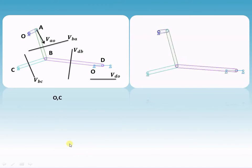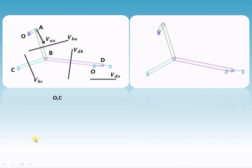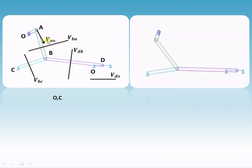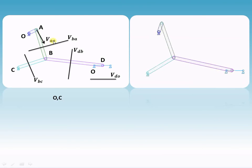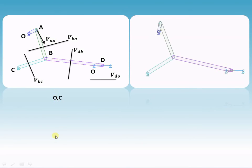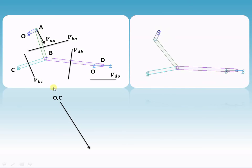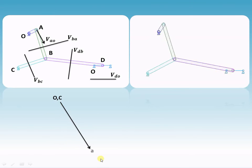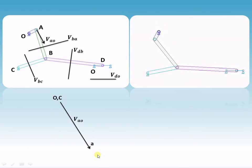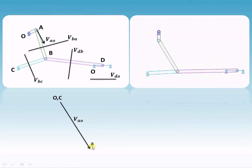First, in the space diagram, take all fixed points — O and C. Now draw to scale the vector V_AO. Out of A and O, point O is known, so from O draw a line parallel to this vector representing velocity of A with respect to O. Since we are finding velocity of A with respect to O, the arrow must be towards point A.